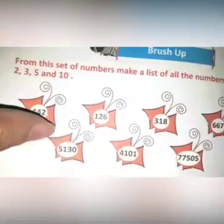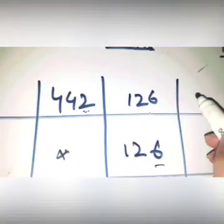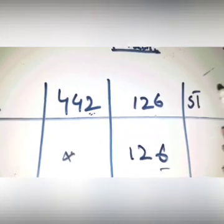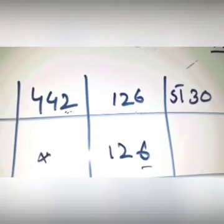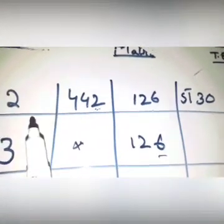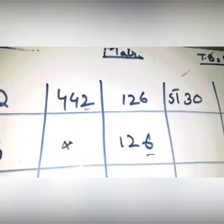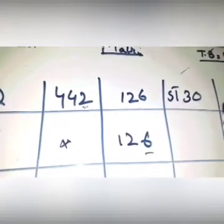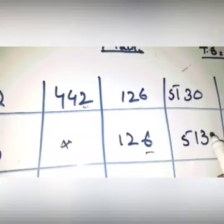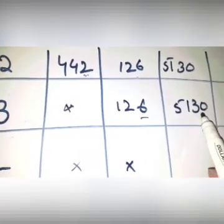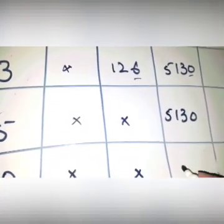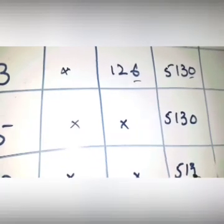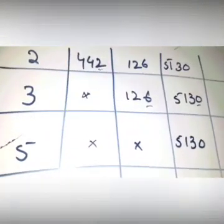Now here is the value 5130. We will write 5130 here because 0 is an even number, so it is divisible by 2. The sum of all digits is 9, and it's also divisible by 3. At the end there is 0, so it's also divisible by 5. The last digit has 0, so it's also divisible by 10.